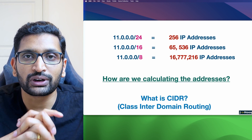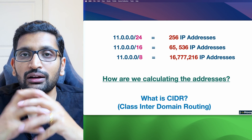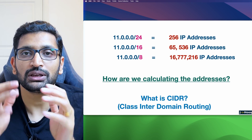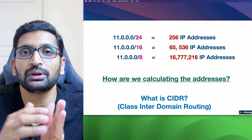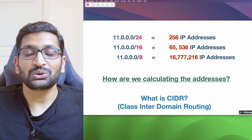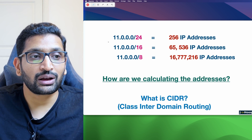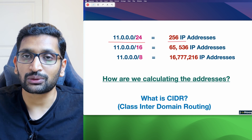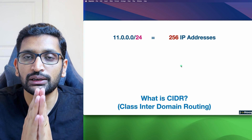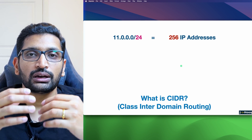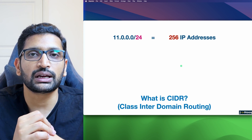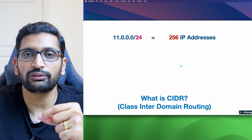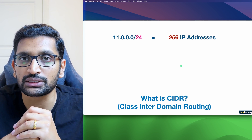Let's talk about one of the most fundamental and underrated concepts of networking, which is CIDR, and how based on CIDR ranges the IP addresses are calculated. In this video we are going to look at how CIDR ranges are defined and how the IP addresses are calculated, along with examples of how IP address calculation is affected by CIDR ranges.